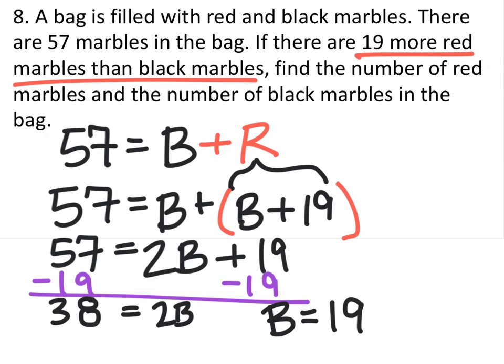And I have 38 equals 2B, and B represents the number of black marbles. We find we have 19 of those. So 19, this is a word problem, so we need to label it black marbles.